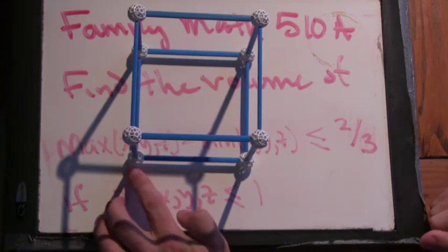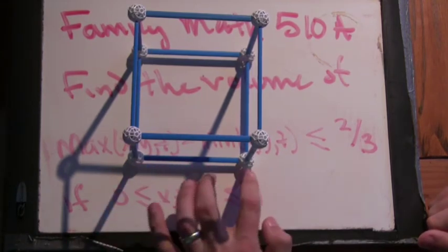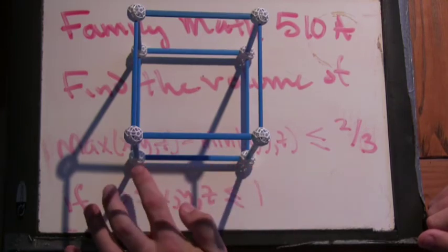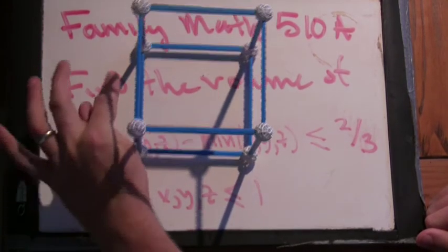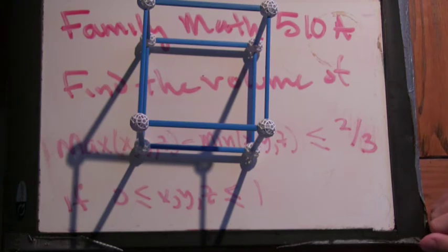Okay, so this is 0, and we go over in the x direction, and the most we can go is 1. The y direction, the most we can go is 1. And the z direction, the most we can go is 1. So that would make a cube. That would make a cube.